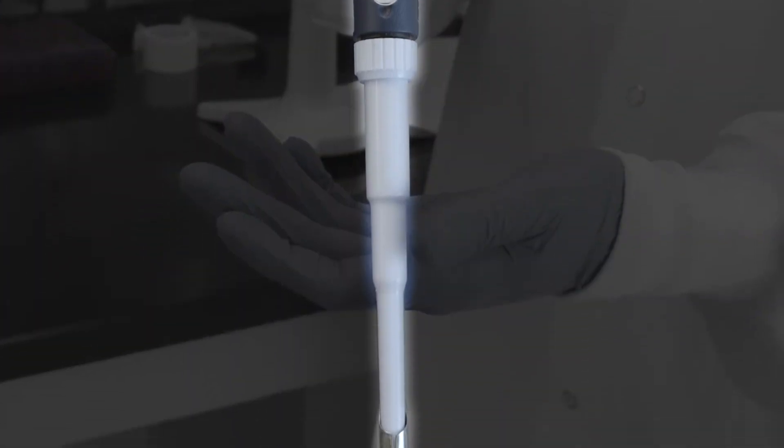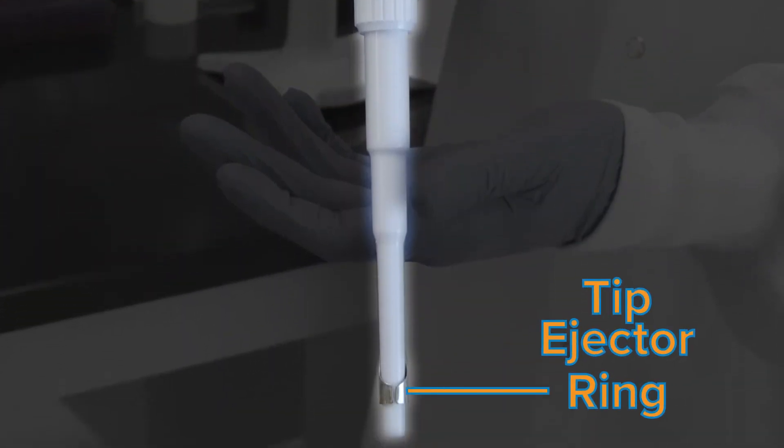Finally, we have the tip ejector ring. This pushes the pipette tip off the pipette, allowing you to quickly dispose of used tips. We'll also explain why that's important in a bit.